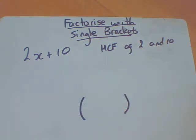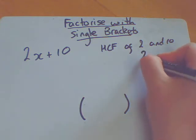I know it's single brackets, there's no squares or anything like that up here. We're just worrying about single brackets to start with. So the highest common factor of 2 and 10 is my question. I think those two numbers, because they're the two numbers that are in my question. So the highest common factor of 2 and 10 is 2.